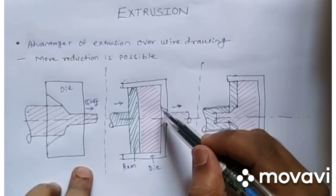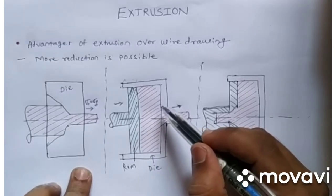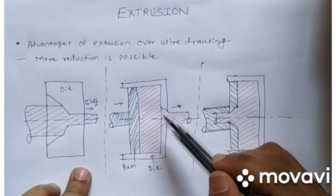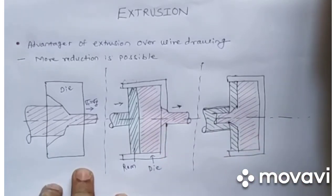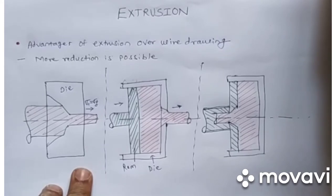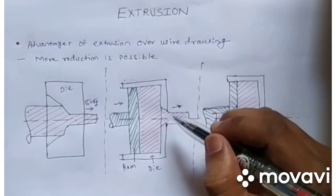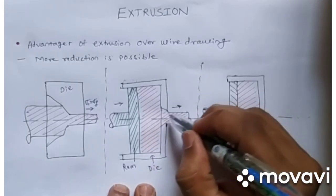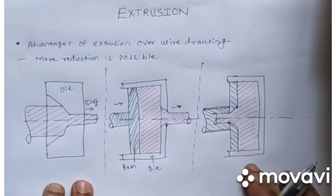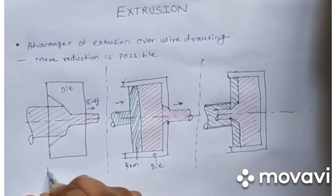The compressive strength of the material is greater than its tensile strength, which gives an advantage in extrusion. The maximum possible reduction is not restricted as in wire drawing. The compressive force is directly applied into the deformation zone, where the stress can exceed the flow stress of the material, causing it to compress and exit through the die cavity.